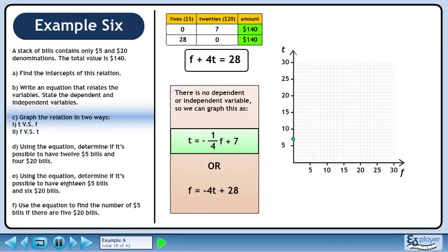Plot the t-intercept. Use a slope of minus 1 over 4 to draw in more points. The graph is discrete since we can't have fractional amounts of a dollar bill.